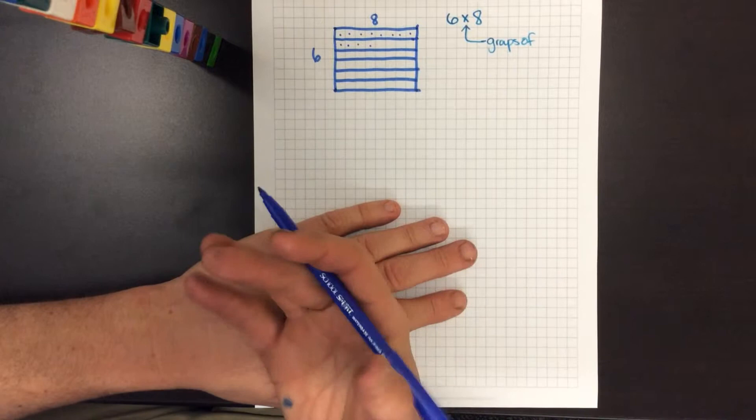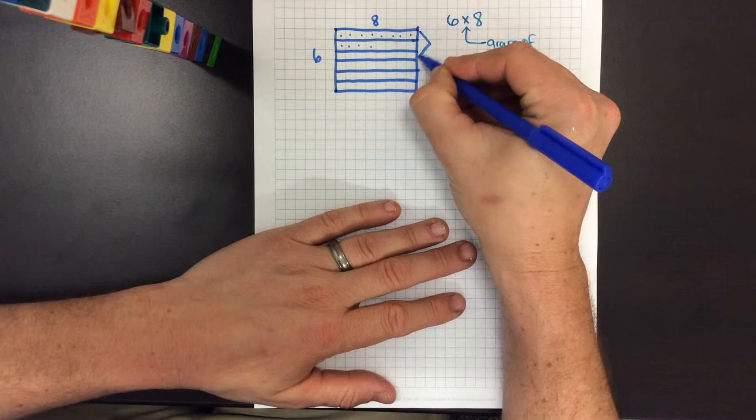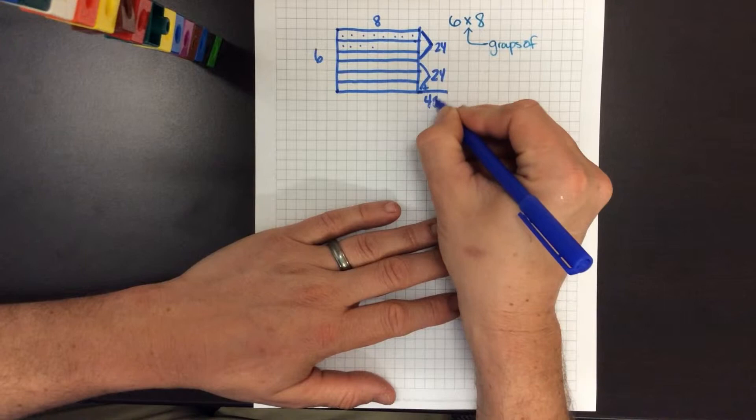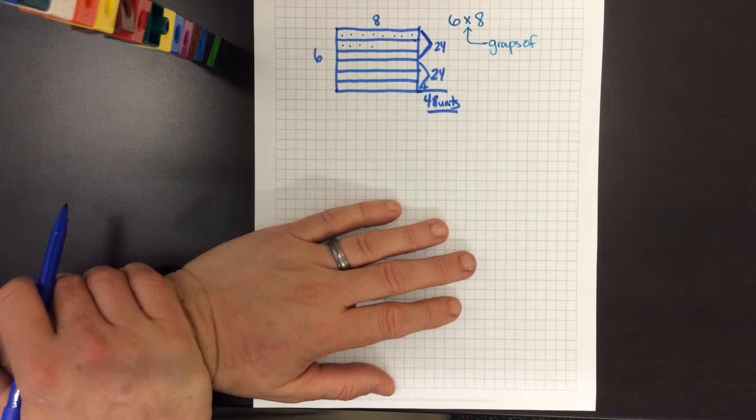So what they might do is they might group three groups of those eights, an easier multiplication problem to get 24, and then figure out from there that when I put those together I get 48 square units. This is the beginning of finding area, the beginning of understanding what multiplication truly is.